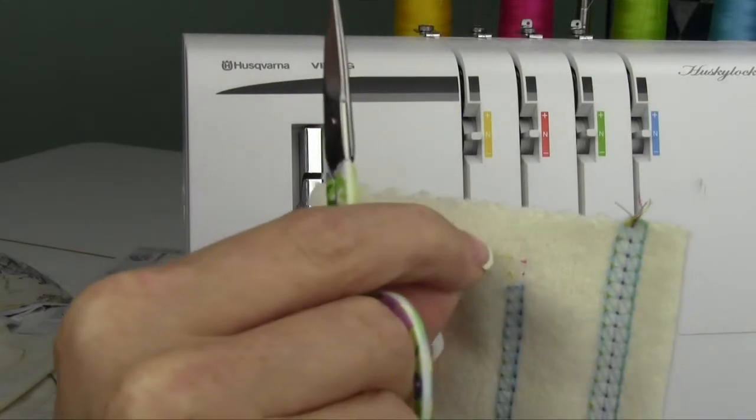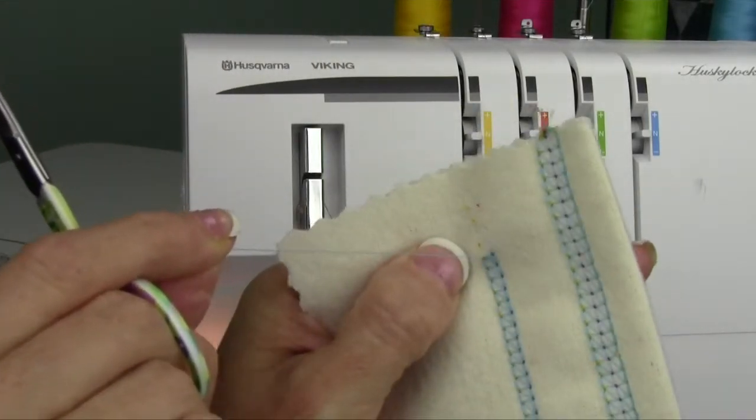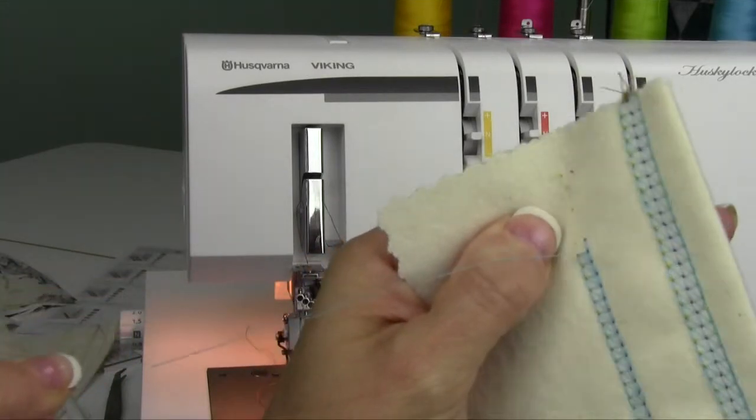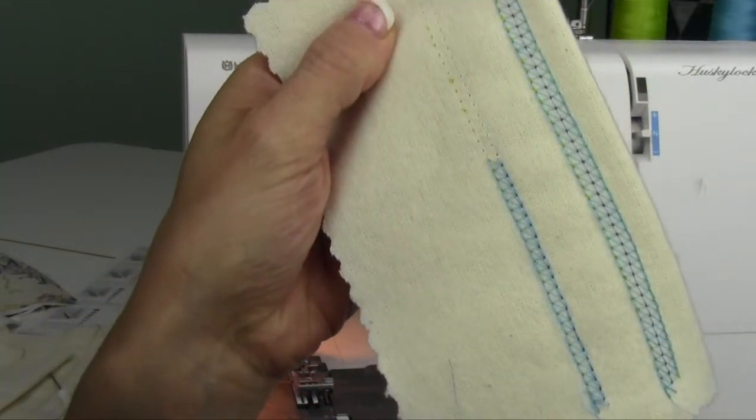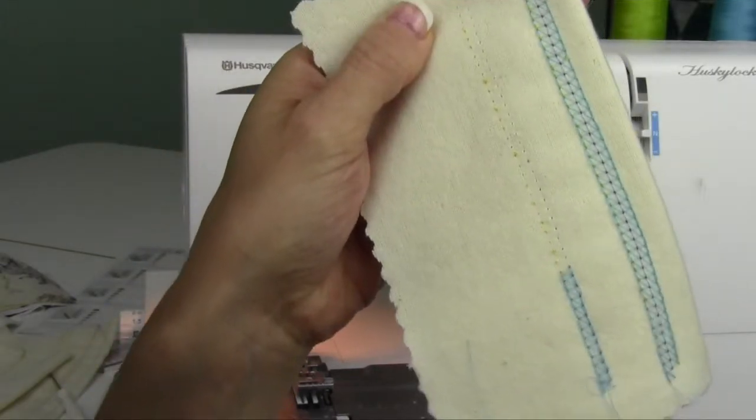Once that loop is exposed, then this will pull right on through and it will come all the way apart. Just keep pulling and that will remove the entire seam all the way out of your fabric.